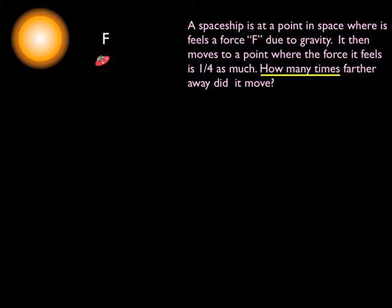So there's the spaceship out by the star, and it's got a force F on it at some distance R. I don't know what that distance is, I'm just going to call it R. Then it moves to a new spot where it feels one fourth the force. I want to figure out how far away this new spot is compared to the original — so some number times the original distance is what I'm after.